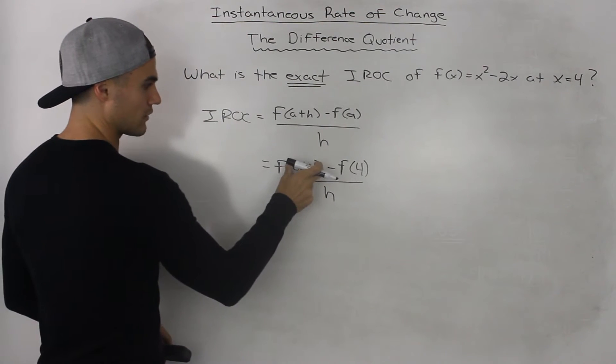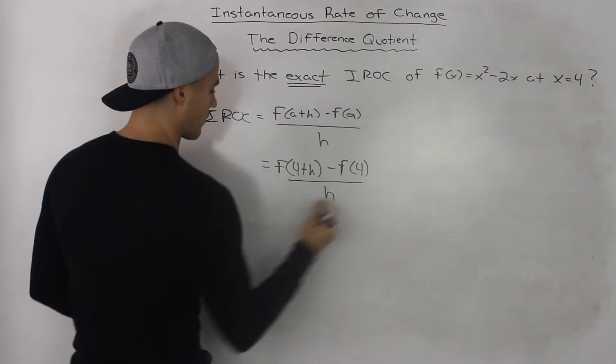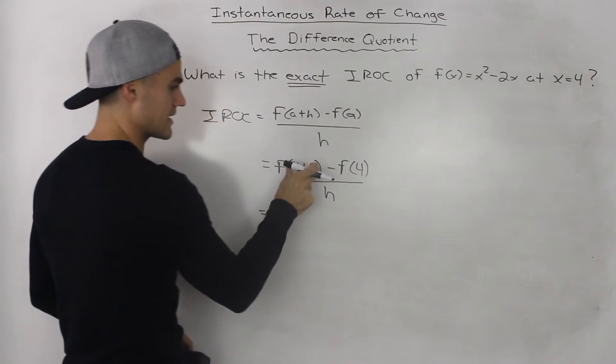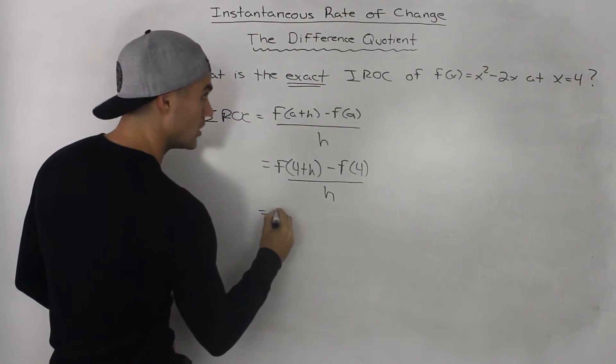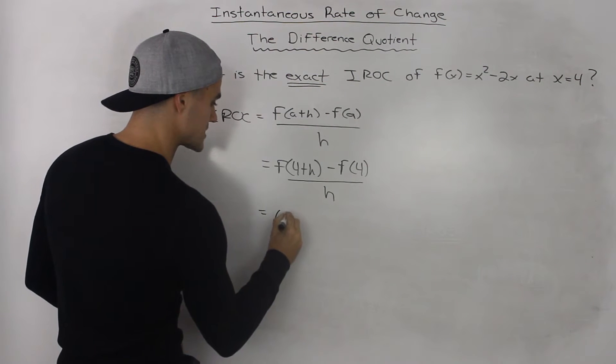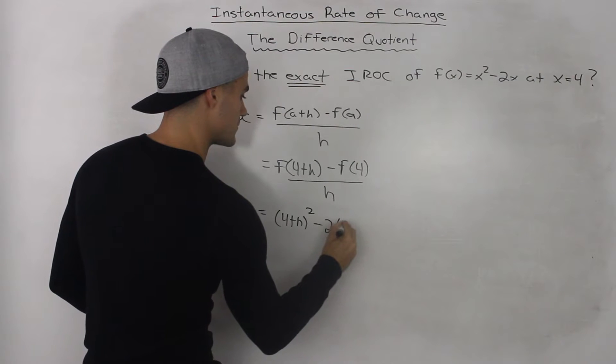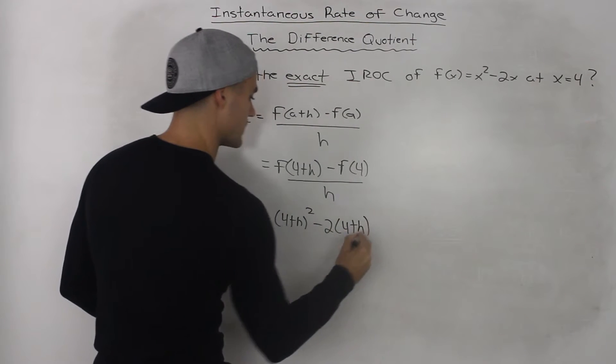And now we have to plug in 4 plus h and 4 into our function. So if f of x is equal to x squared minus 2x, then f of 4 plus h would be 4 plus h squared minus 2 times 4 plus h. Right?